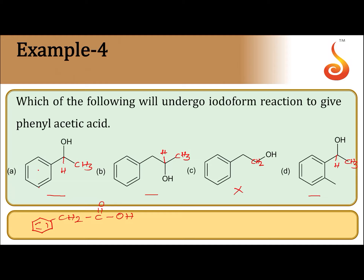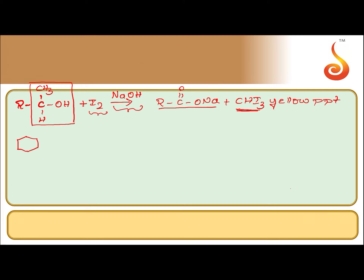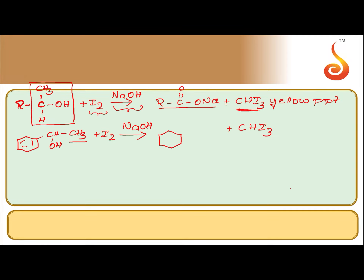Among these, let us see which will give phenylacetic acid. Starting with the first compound: C6H5-CHOH-CH3 treated with iodine and NaOH. The CH3 group is converted to iodoform (CHI3), and what remains is the sodium salt of benzoic acid (C6H5-COONa), not phenylacetic acid. So option 1 is ruled out.